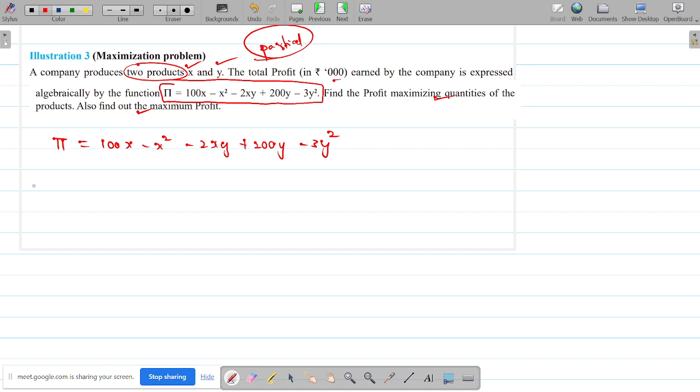We differentiate partially. With respect to necessary condition, we differentiate partial with respect to X. This is ∂π/∂X. Sometimes in short you have to write πₓ. Then we differentiate, 100 then minus 2X, this implies minus 2Y, Y is constant. Then 0. Ultimately this would be 100 minus 2X minus 2Y alone.